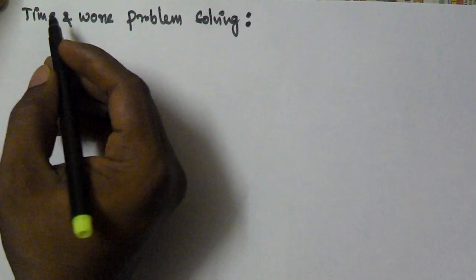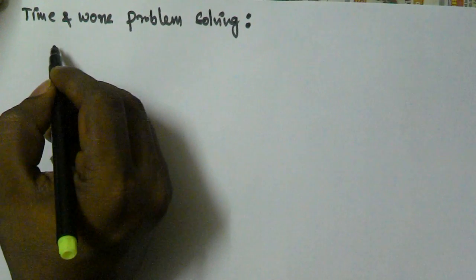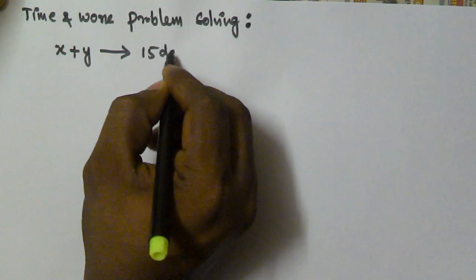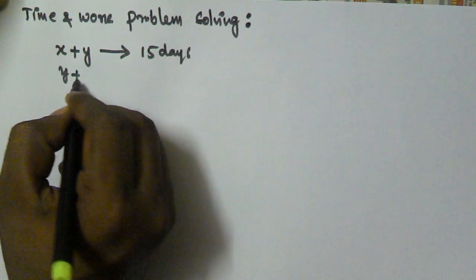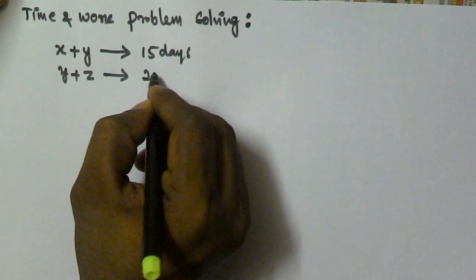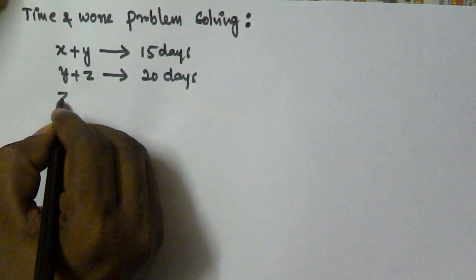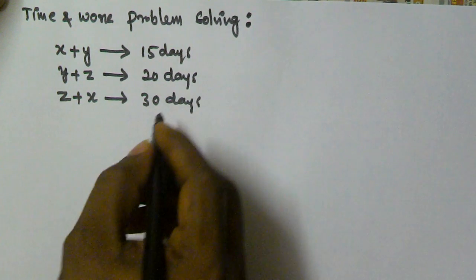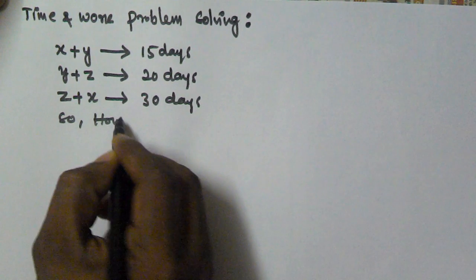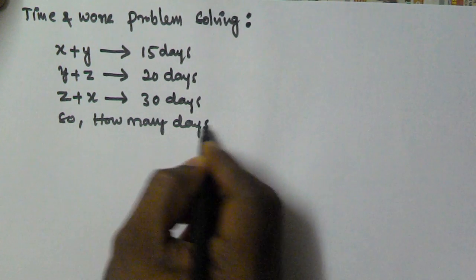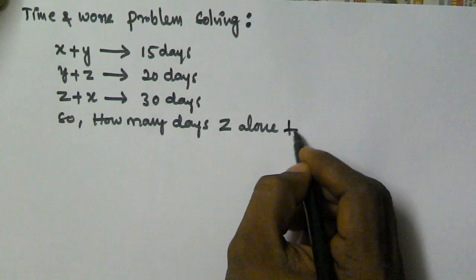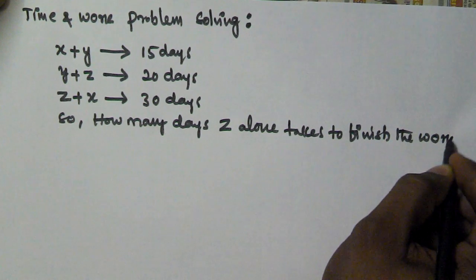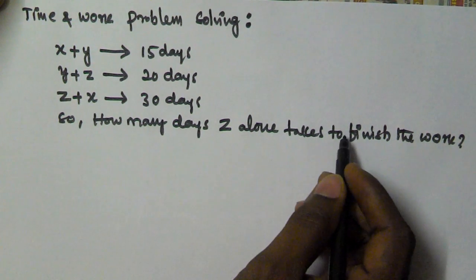I am going to show you how to solve a problem related to time and work. Person X and Y together finish a task in 15 days. Person Y and Z together finish the task in 20 days. And person Z and X together finish the same task in 30 days. We have to find how many days Z alone is going to take to finish the task.